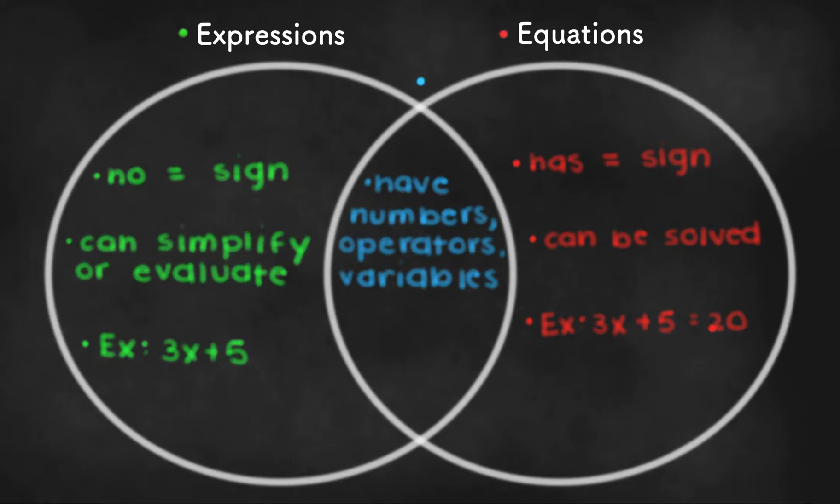So the major difference between expressions and equations is that equations have an equal sign while expressions don't. Also, unlike expressions, equations can be solved. Expressions can only be simplified or evaluated.